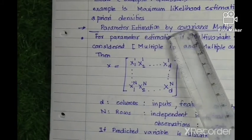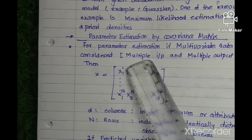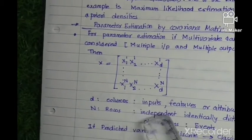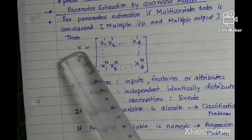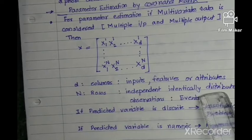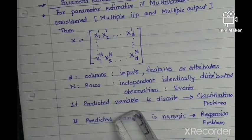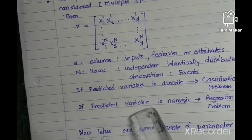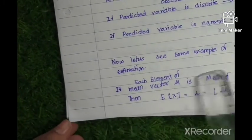Now let us take parameter estimation by covariance matrix. For multivariate data, we have multiple inputs and multiple outputs. We can represent our data with d columns, called inputs, features, or attributes, and a matrix X having n rows which are independent and identically distributed. If the predicted output for that matrix is discrete, it becomes a classification problem.